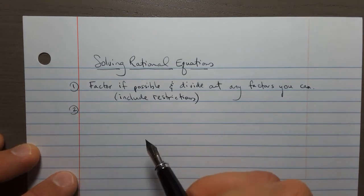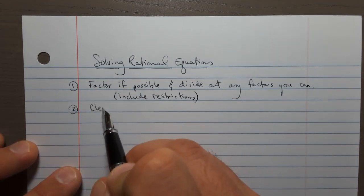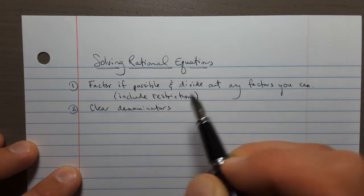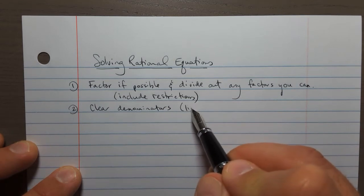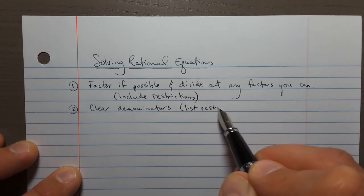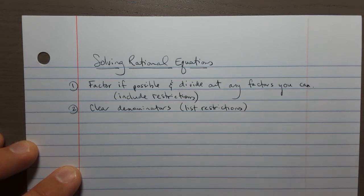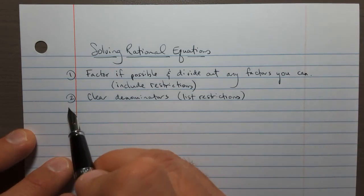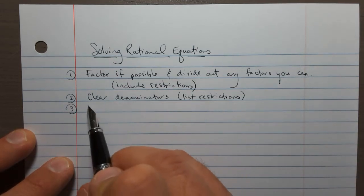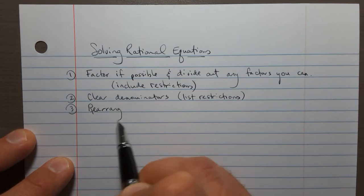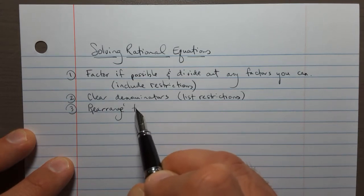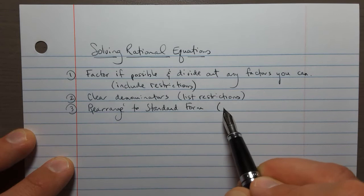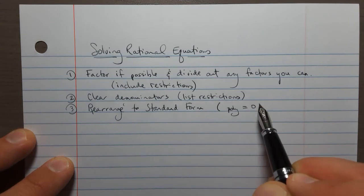Step 2. Once that's all finished, you're going to clear denominators. And once you do that, you have to list restrictions again, any new restrictions that you've just created. Or what I'll actually show you, you're going to be afraid of losing them, and that's why we'll write them down. The third step is to rearrange to standard form, which is to write it as a polynomial equal to 0.